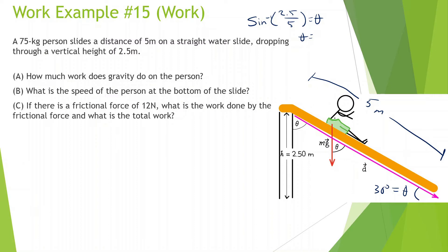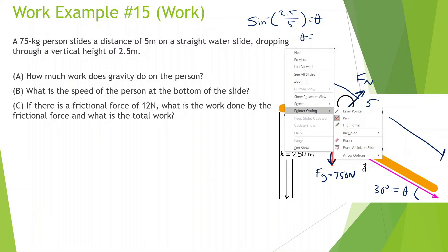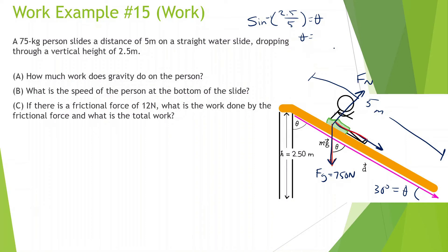How much work does gravity do? Let's draw the free body diagram — force of gravity is 75 kg times 10, so 750 N, force normal perpendicular to the slide, and no friction for now. The displacement is 5 meters down the slide. The person is moving down the incline, and the force of gravity is straight down. The angle between the force and displacement: we know 90 degrees from vertical to the slope surface, and the incline is 30 degrees, so the angle between gravity and displacement is 60 degrees.